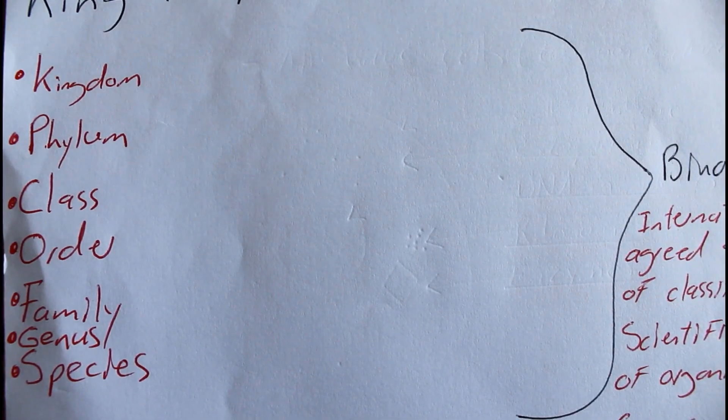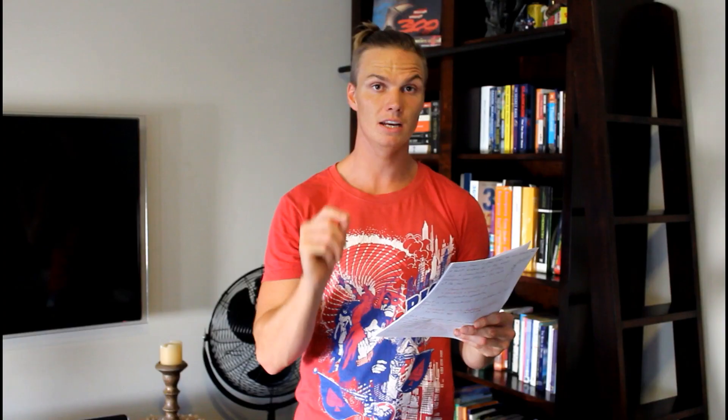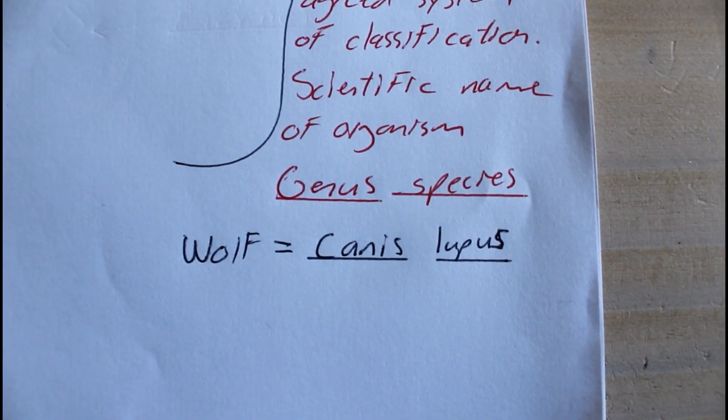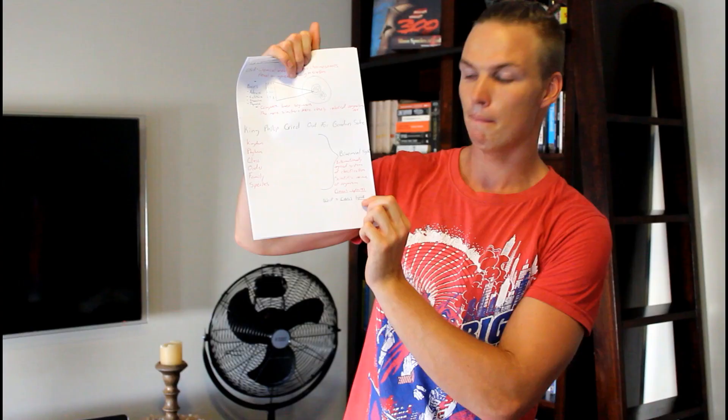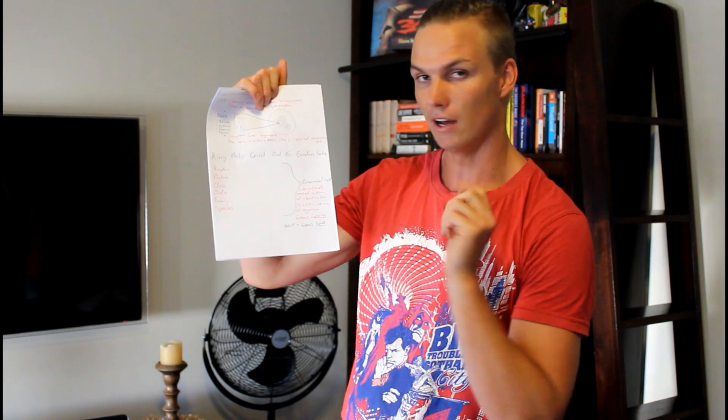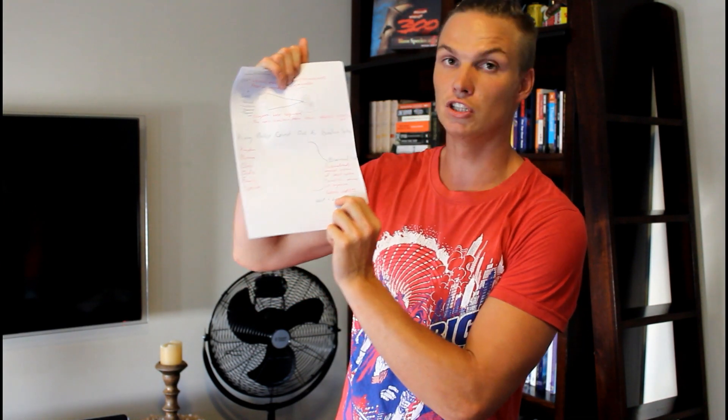Familiarize yourself with that system because you are going to use it. Be aware that your genus and species name together form the scientific name of each organism. For example, a wolf's scientific name is Canis lupus — Canis is the genus and lupus is the species. Scientific names are underlined when handwritten, or italicized in a textbook. The genus name is always capitalized, while the species name is always in lowercase.